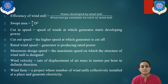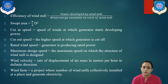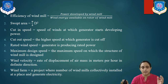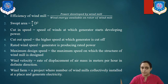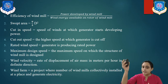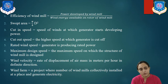Now let us consider the swept area. If there is a rotor diameter D, the swept area is calculated as π/4 × D². The swept area is the projected area of the windmill — considering the rotor, the total area from one point to another across the full diameter is known as the swept area.